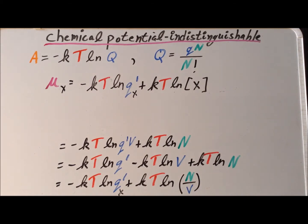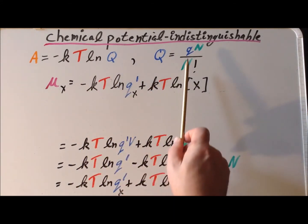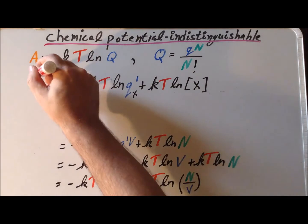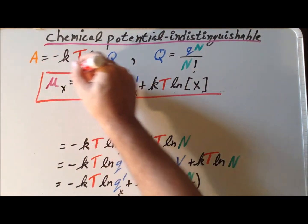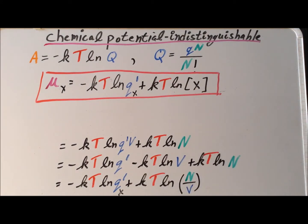We see that the chemical potential of a substance, if it is an indistinguishable particle substance, depends upon the partition function for an individual particle plus an expression that depends upon the overall concentration. This is our final result. As always, I thank you very much for your kind attention. Have a good one.